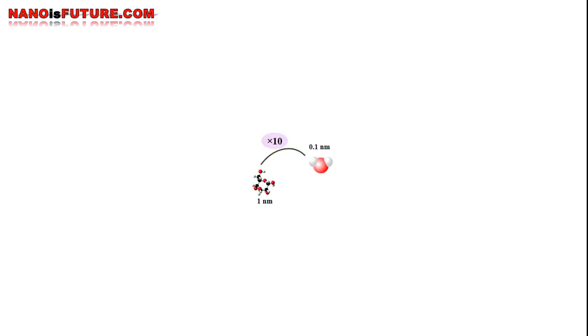The diameter of a water molecule is about 0.1 nanometers. A glucose molecule with 1 nanometer diameter is 10 times that of a water molecule. An antibody with 10 nanometers diameter is 10 times that of a glucose molecule.